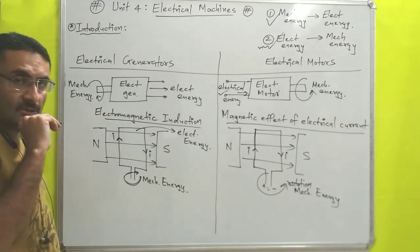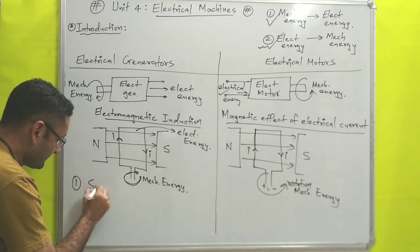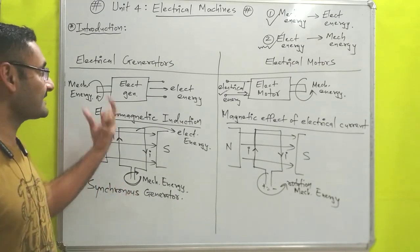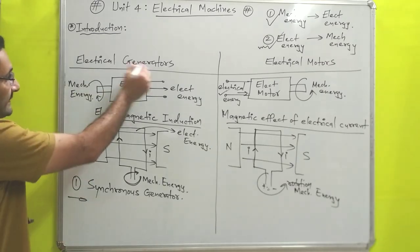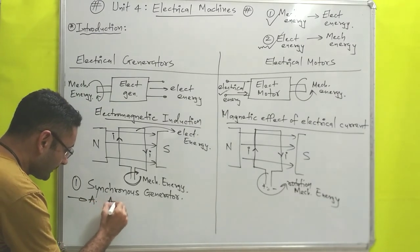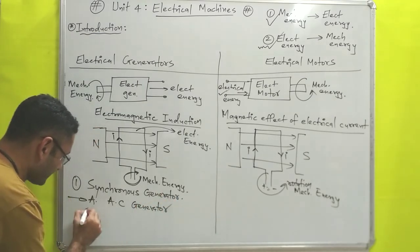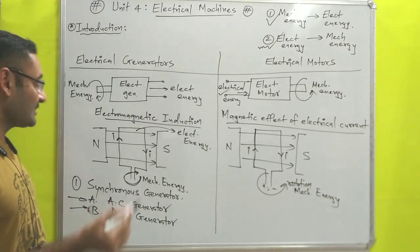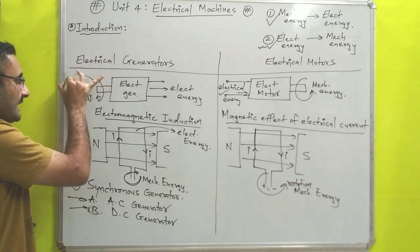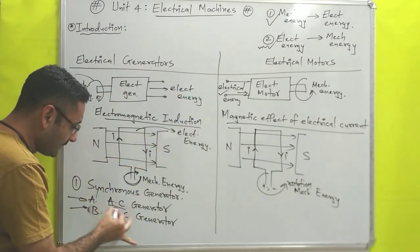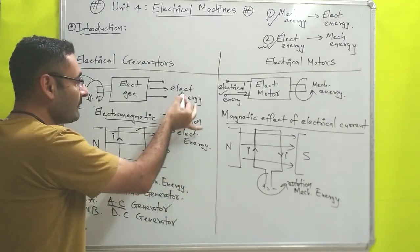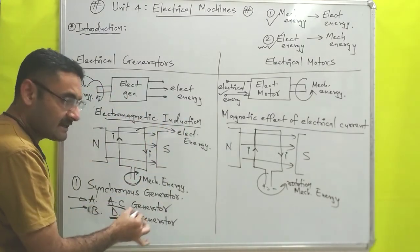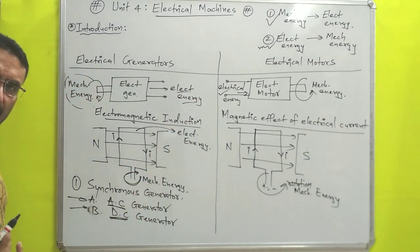In this unit you have to study one generator which is known as a synchronous generator — its construction and working will be covered. Electrical generators have two types: the first type is known as an AC generator, and the next type is known as a DC generator. An AC generator converts mechanical energy into alternating current electricity, while a DC generator converts mechanical energy into direct current electricity.